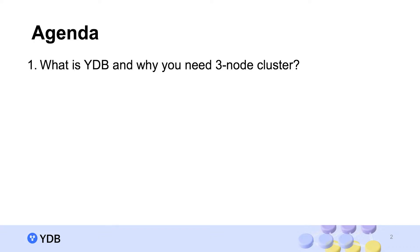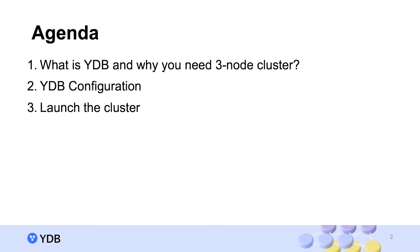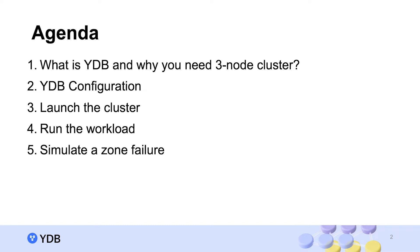In this video we'll describe YDB. We will configure and run a YDB three-node cluster deployed in three different availability zones. To demonstrate that YDB survives node failure, we will stop one node of the cluster and make sure the cluster is still available.